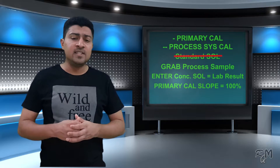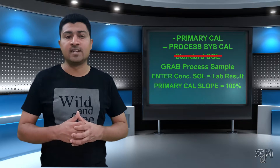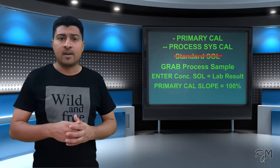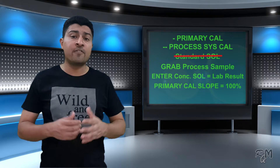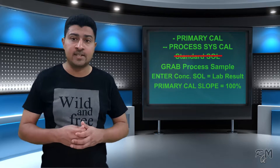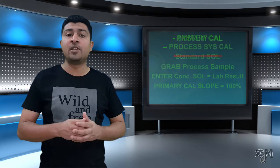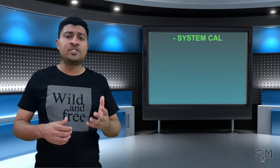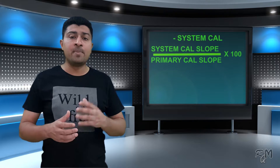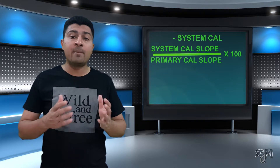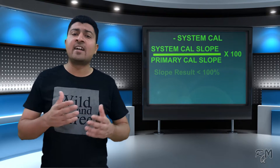These are the two ways to perform primary calibration of this analyzer. Remember, primary calibration should be performed after first startup or after any major maintenance. In normal condition you should use the system calibration menu. In system calibration, the slope result is calculated by comparing with the reference slope of primary calibration — usually this result will be less than 100%.